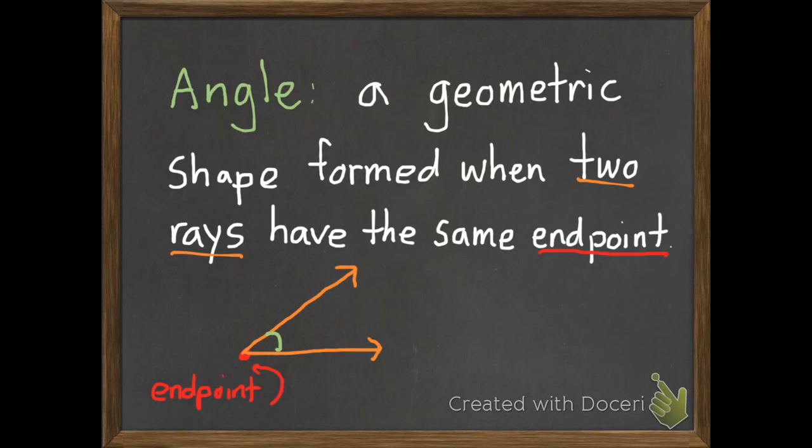Once again you have an endpoint right there, two rays, and the geometric shape that's formed is called an angle.